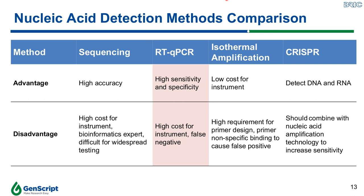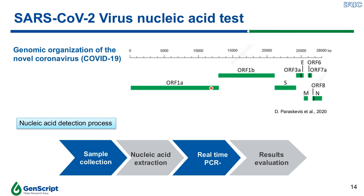Sequencing data has shown that the viral genome consists of approximately 30,000 base pairs that encode 10 different unique proteins. Researchers designed and developed PCR-based detection assays based on sequences encoding these specific unique proteins. The entire nucleic acid detection workflow includes sample collection, nucleic acid extraction, real-time PCR, and results evaluation.